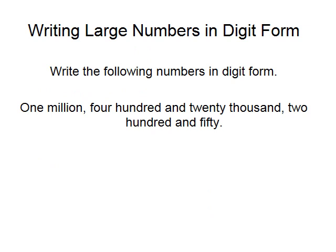This is the second video from the module Whole Numbers and Integers, and in this video we're writing large numbers in digit form. We're asked to write 1,420,250 in digit form. The words 'million' and 'thousands' are good keywords to leave the gap you need between each set of 3 digits. So I would write 1, then leave a gap, 420 — that's 420,000 — leave a gap, 250. So yes, I've written the number in digit form.